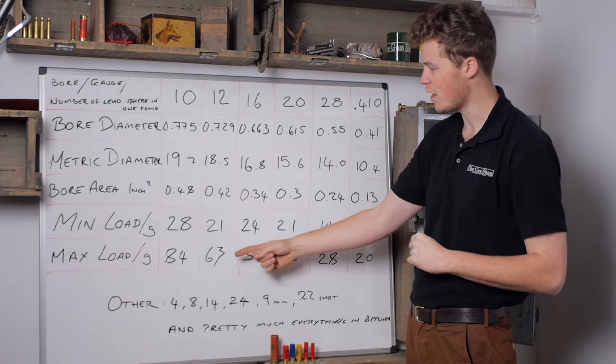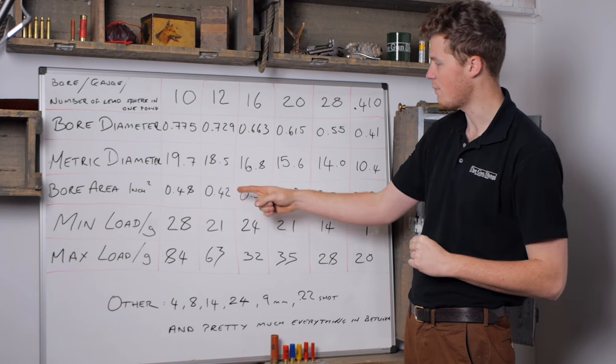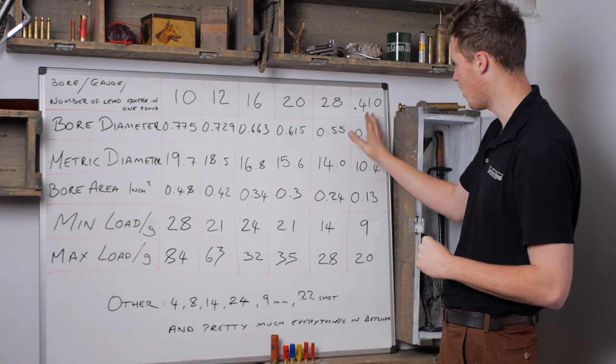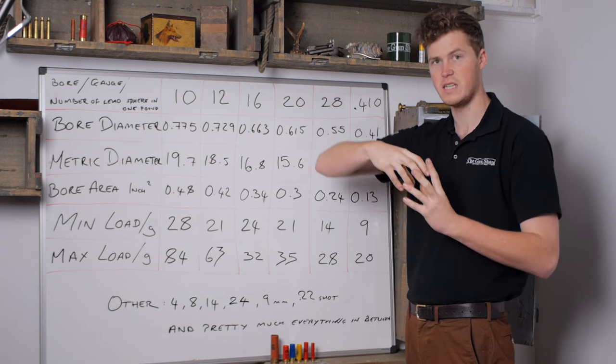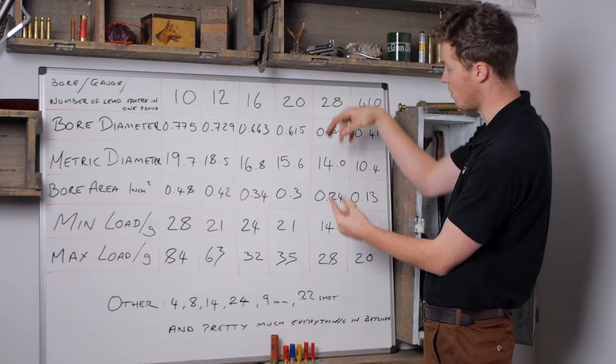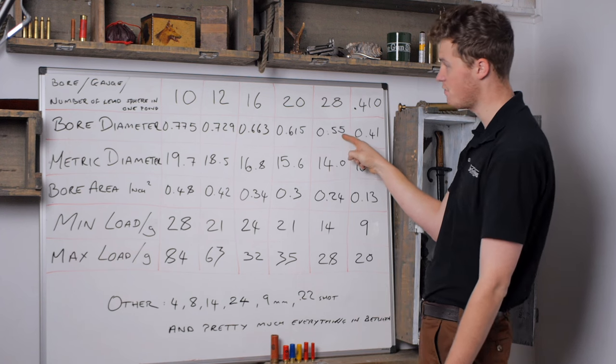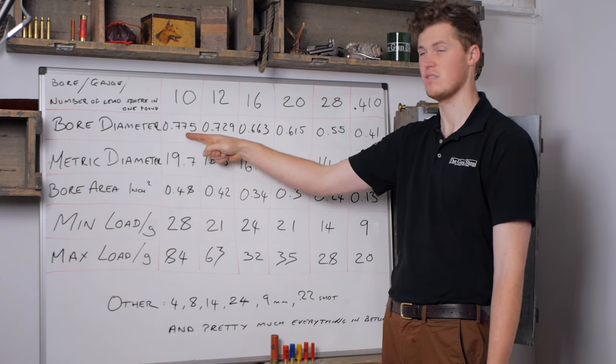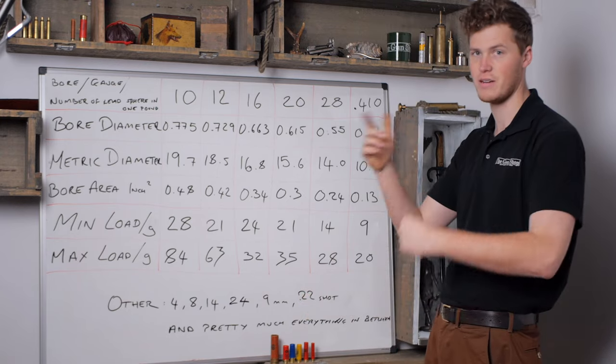When we move on to loads, although you can put a 28-gram load in everything on the table here apart from the .410, the shot column will obviously get significantly longer, because 24 grams of shot will fill up more space in the 0.55 tube than the .775 tube, obviously, and as such will require very different pressures and logic to get it out the end of the barrel.